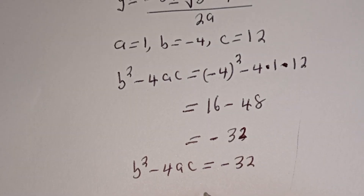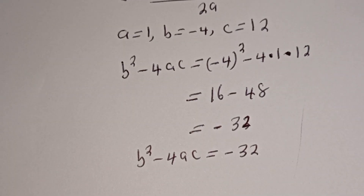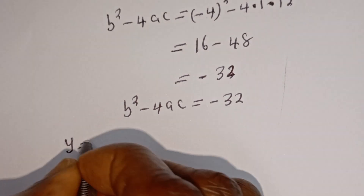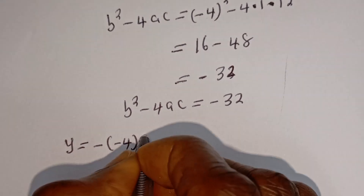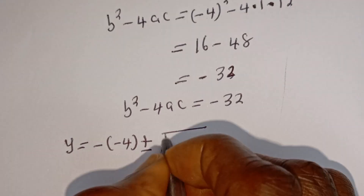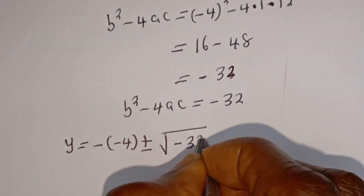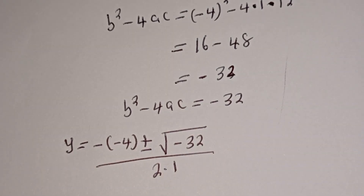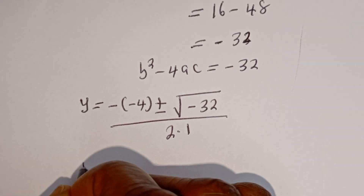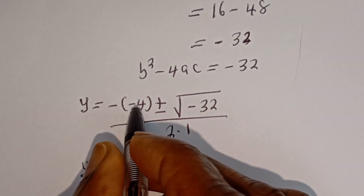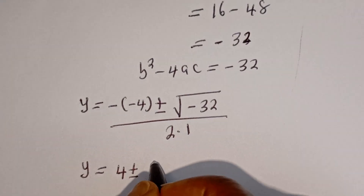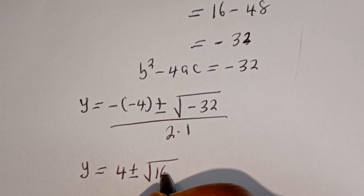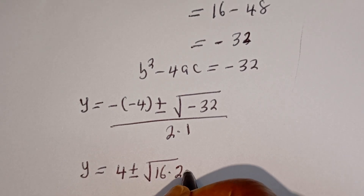Now let's plug this into the formula. y equals minus bracket minus 4, plus or minus square root of minus 32, divided by 2 multiplied by 1. y equals 4 plus or minus square root of minus 32.